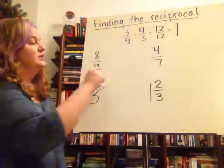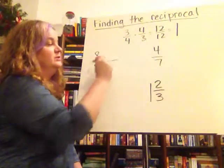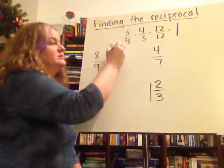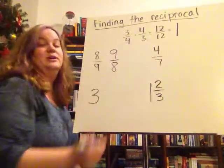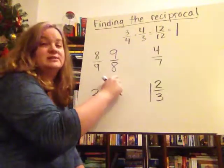When you take a look at eight-ninths to find the reciprocal, you're going to make whatever the denominator is, the numerator, and whatever the numerator is, the denominator. And so the reciprocal of eight-ninths is nine-eighths.